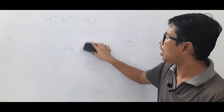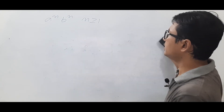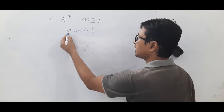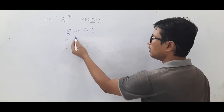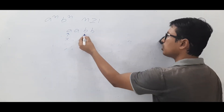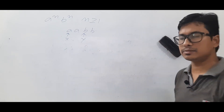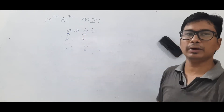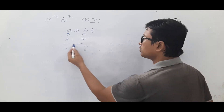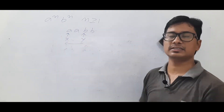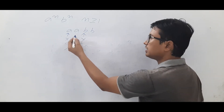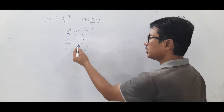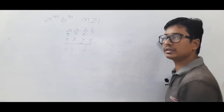For the input AABB, the Turing machine works as follows: take the first A, mark it as X, then move right until you find the first B and mark it as Y. Once marked, move left to find the next A, mark it as X, then move right again to find the next unmarked B and mark it as Y.